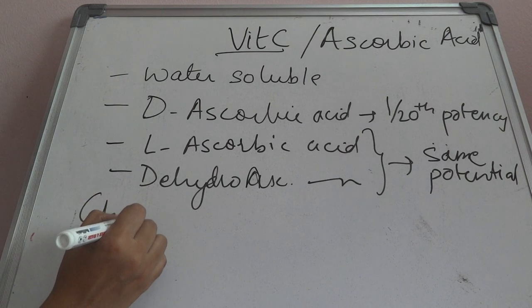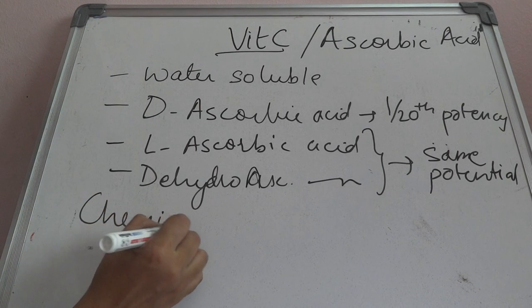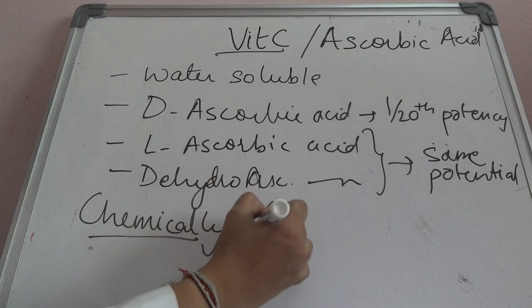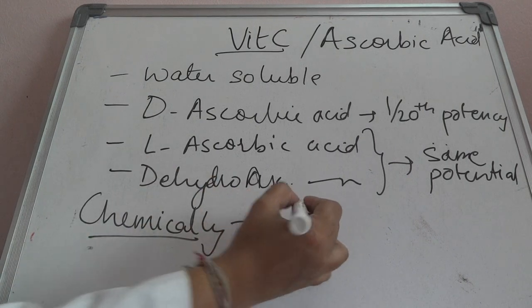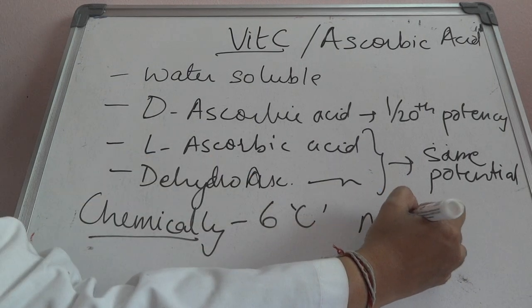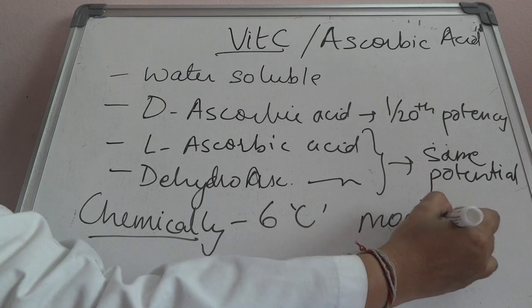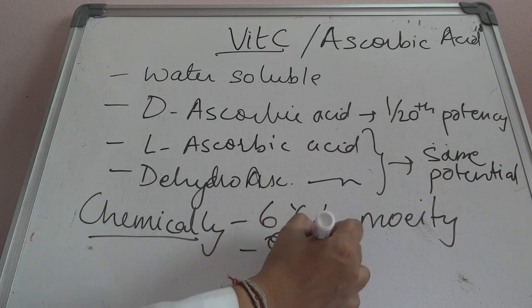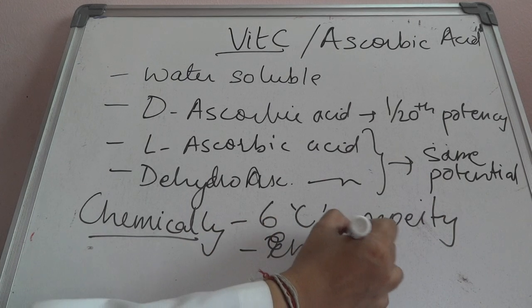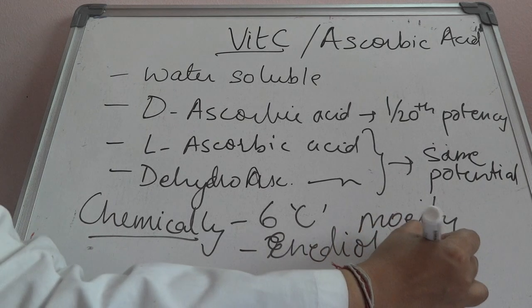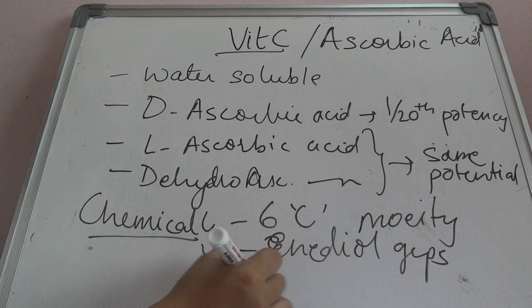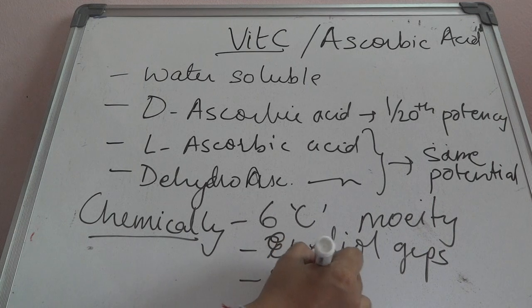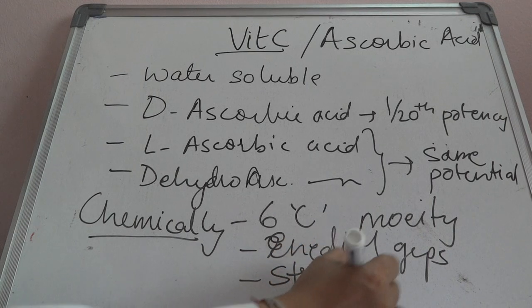Chemically, vitamin C is a six-carbon moiety. It has enediol groups and acts as a strong reducing agent.